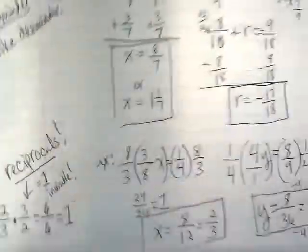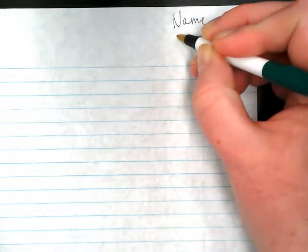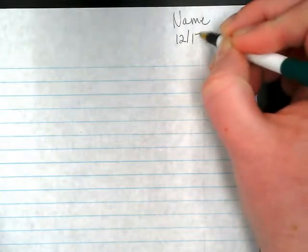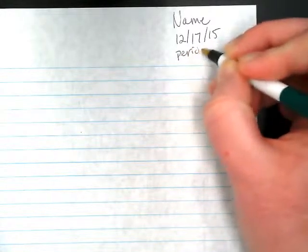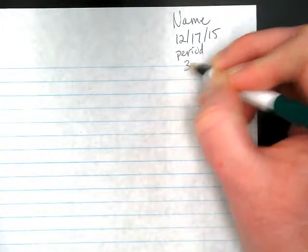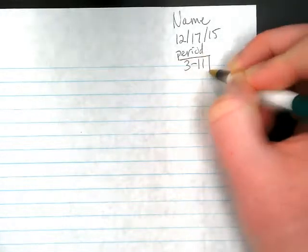Now let's get your binder paper ready. We really need to focus on correct headings so that your work gets scored correctly. Put your name. Today's date. Put the class period. And make sure you're putting it. We've now moved into 3-11.